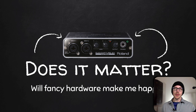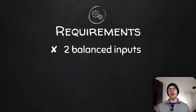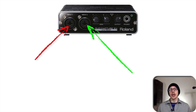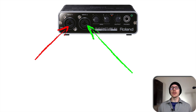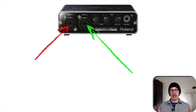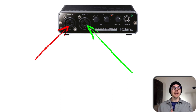Really the only requirement is that it have two balanced inputs. Why do you need two balanced inputs? To do a transfer function — a two-channel measurement — what we're going to do is compare the input to the output. So we want to compare what's coming out of our mix console or out of our audio interface with whatever is the device under test.